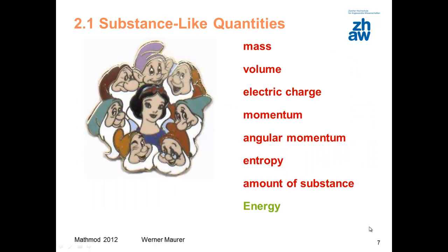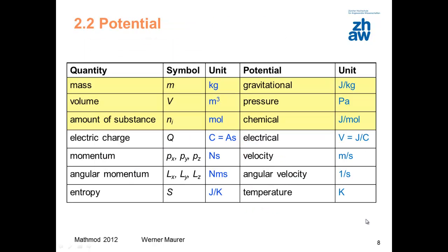In classical physics, there are seven other substance-like quantities besides energy. Momentum, angular momentum, or entropy can be seen as quantities just as mass or volume can. Each substance-like quantity is associated with a certain potential. Pressure is the hydraulic potential. Velocity or angular velocity is the mechanical potential. And temperature is a thermal potential. These potentials also determine how much energy is transported with a certain quantity.